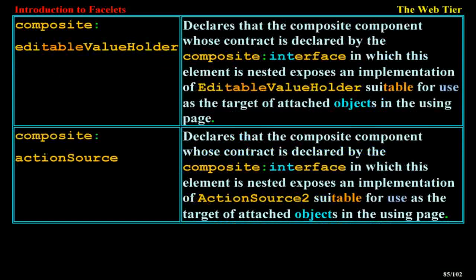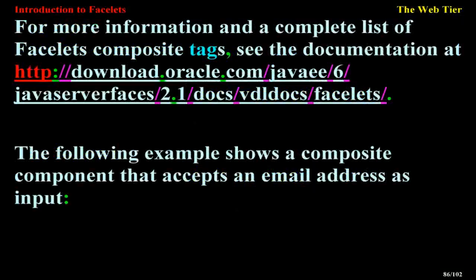Table 5-3 lists the most commonly used composite tags and their functions, including: composite:interface (declares the usage contract), composite:implementation (defines the implementation), composite:attribute (declares an attribute for the composite component), composite:insertChildren (reparents child components into the composite), composite:valueHolder (exposes a value holder for attached objects), composite:editableValueHolder (exposes an editable value holder), and composite:actionSource (exposes an action source 2 implementation for attached objects). For more information, see the Oracle JavaServer Faces 2.1 documentation.